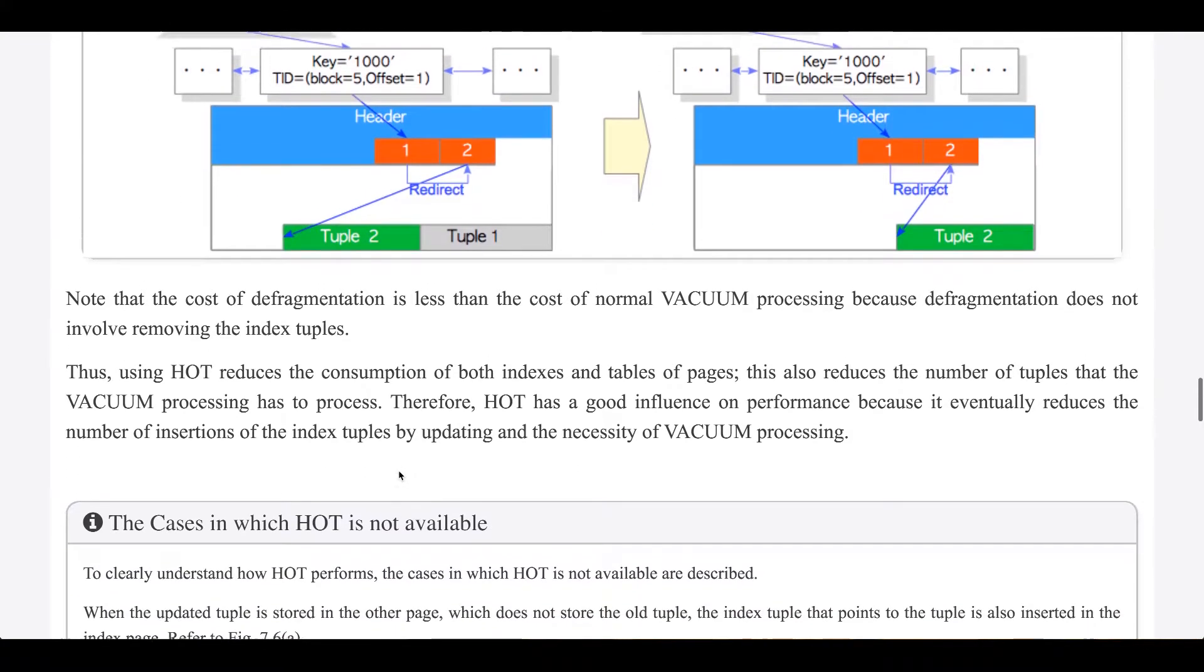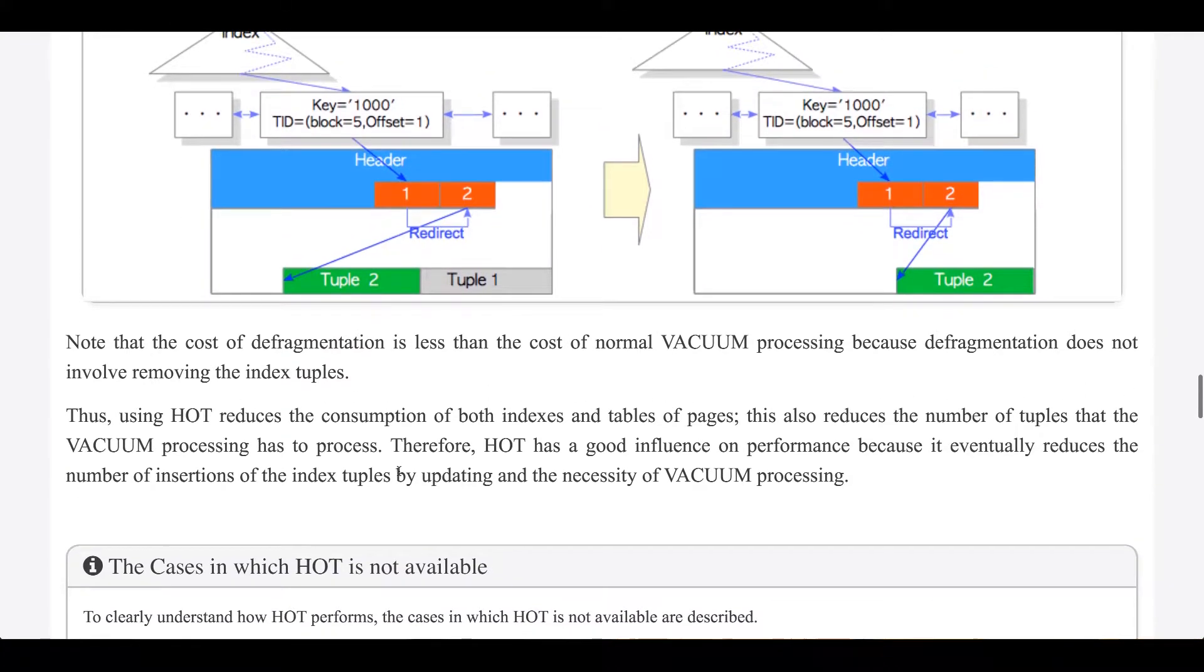Thus, using HOT reduces the consumption of both indexes and tables of pages. This also reduces the number of tuples that the vacuum processing has to process. Therefore, HOT has a good influence on performance, because it eventually reduces the number of insertions of the index tuples by updating and the necessity of vacuum processing.